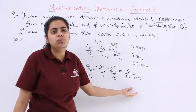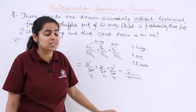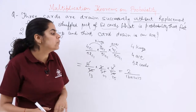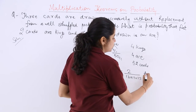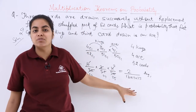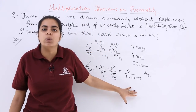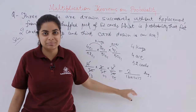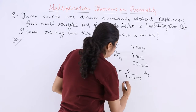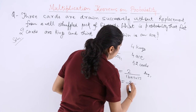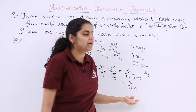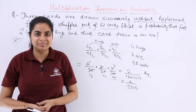You can complete the multiplication on your own — do not leave it unfinished. You have to solve the whole multiplication. The final answer is 2 over 5525.